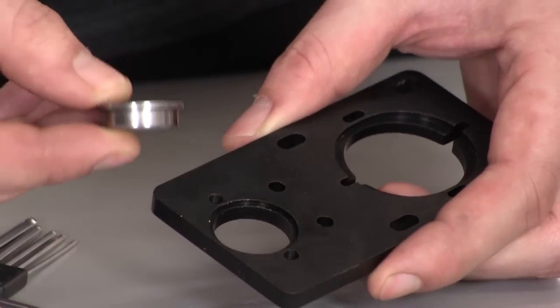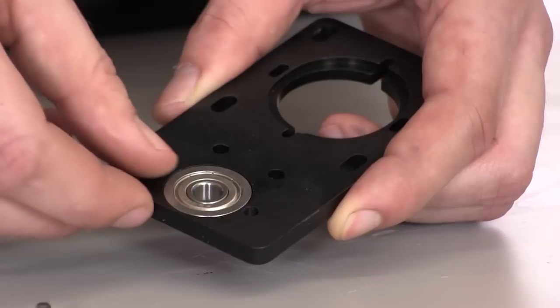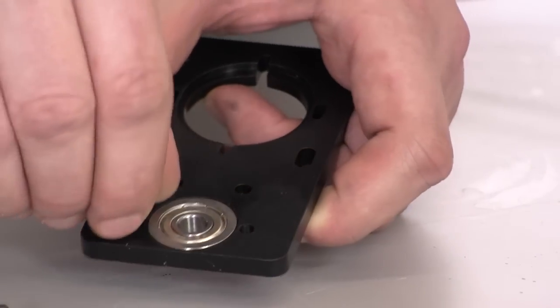Take a look at the flanged bearing. The larger part, or the flange, will not fit through this hole. So insert it with the smaller side first.